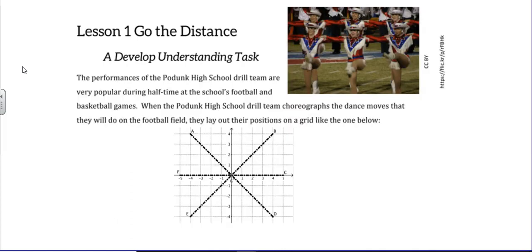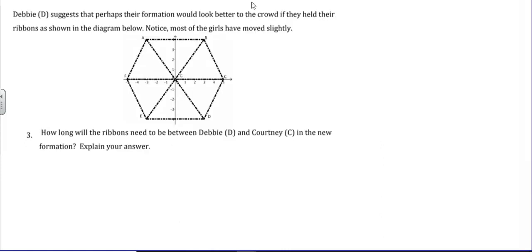The performances of the Podunk High School drill team are very popular during halftime at the school's football and basketball games. When the Podunk High School drill team choreographs the dance moves that they will do on the football field, they lay out their positions on a grid like the one below. Debbie, who's standing at point D, suggests that perhaps their formation would look better to the crowd if they held their ribbons as shown in the diagram below. Notice most of the girls have moved slightly.